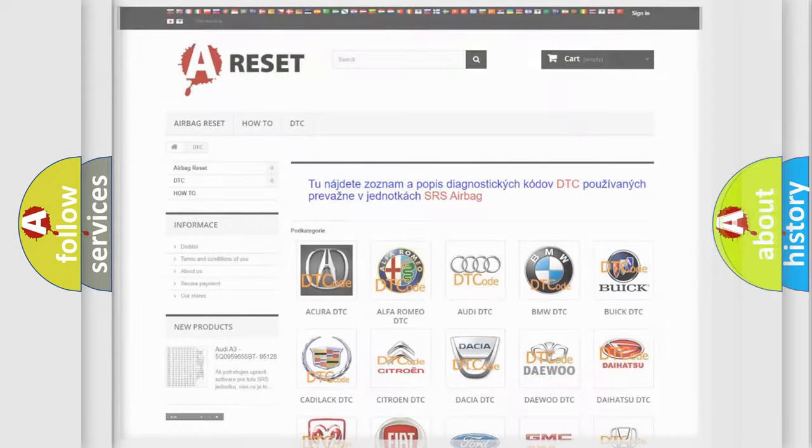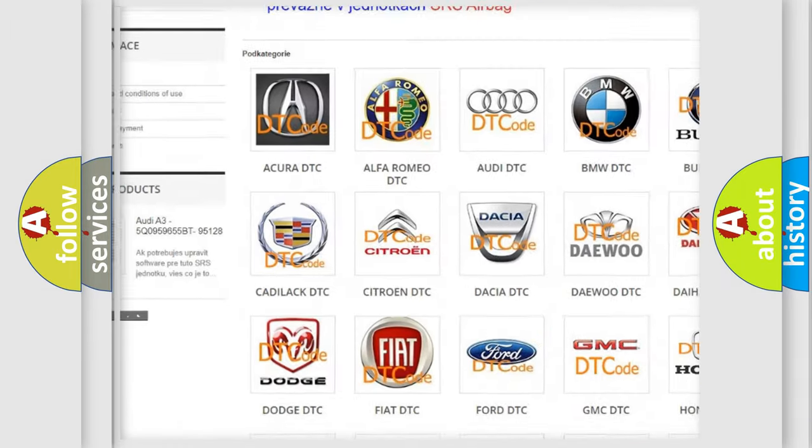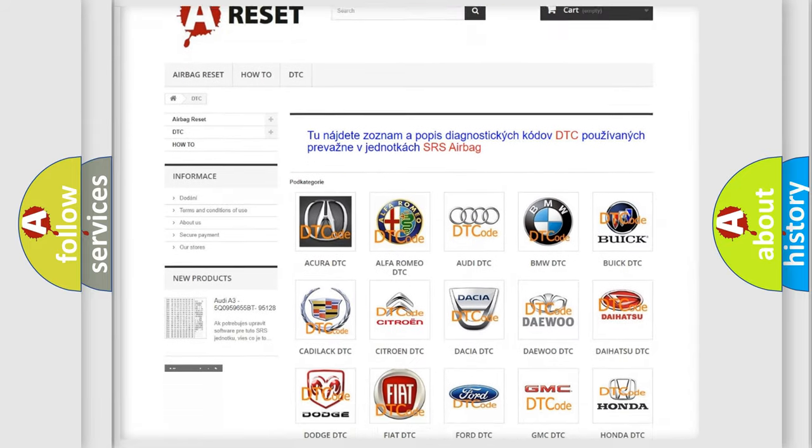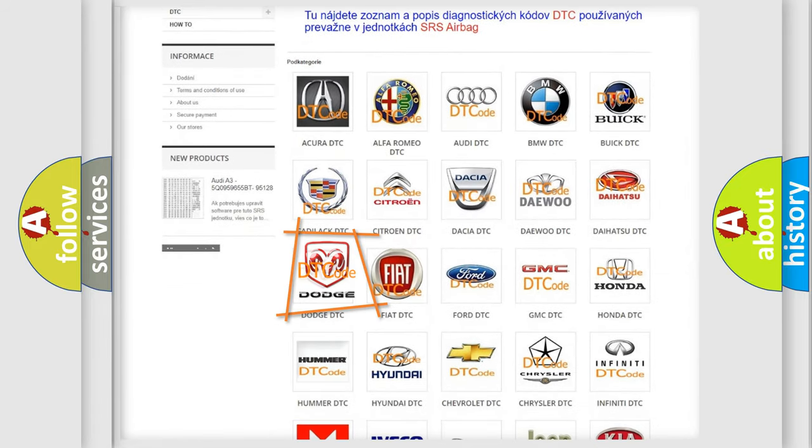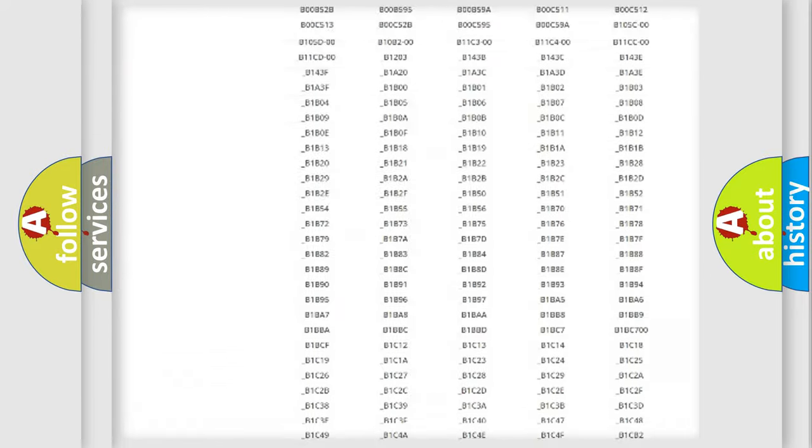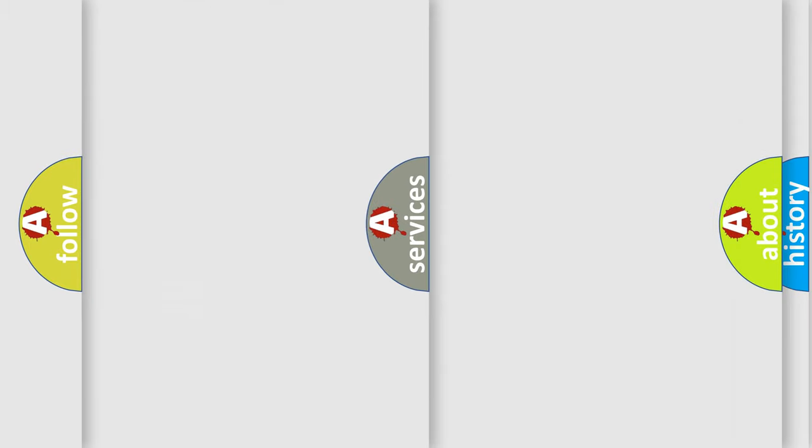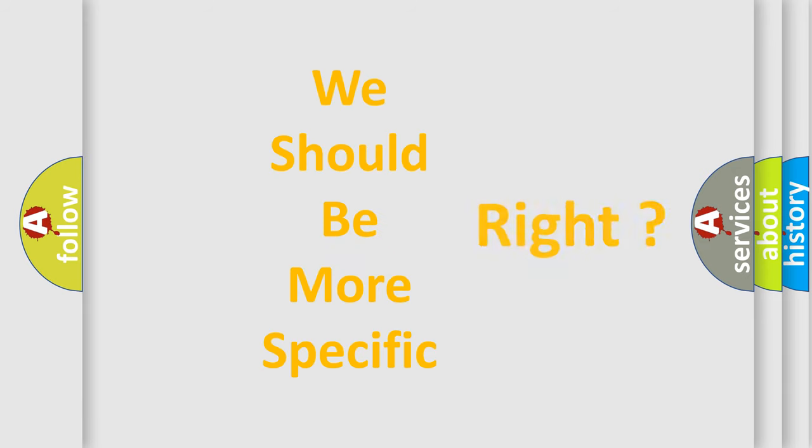Our website airbagreset.sk produces useful videos for you. You do not have to go through the OBD2 protocol anymore to know how to troubleshoot any car breakdown. You will find all the diagnostic codes that can be diagnosed in Dodge vehicles, and also many other useful things. The following demonstration will help you look into the world of software for car control units.